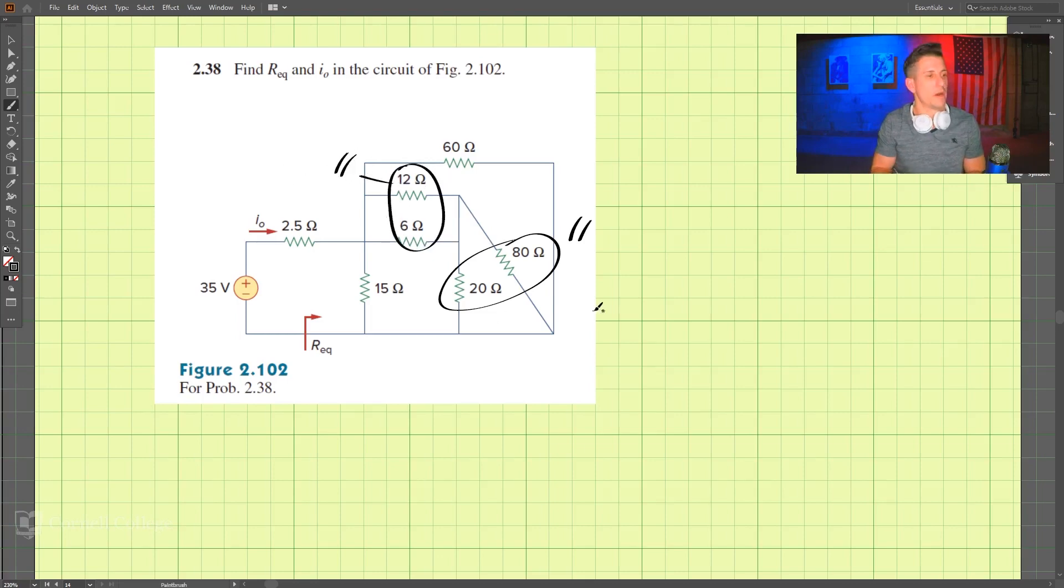Those are in parallel. So let's do these first. So we have 1 divided by 80 plus 1 divided by 20 equals 1 over that combined resistance there. And we get R is equal to 16 ohms for these two, so 16 ohms.